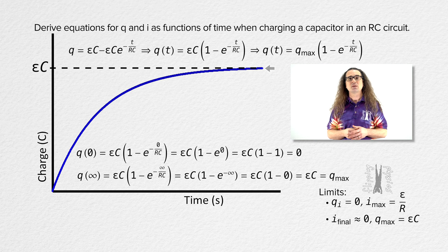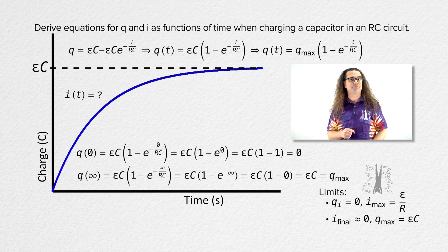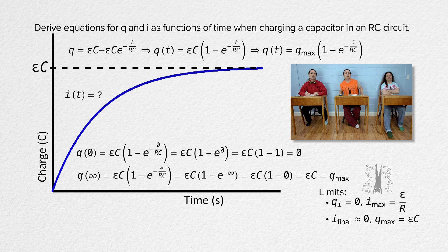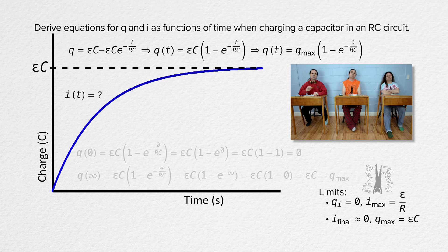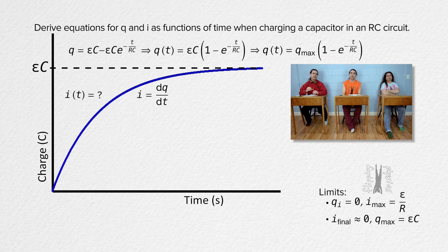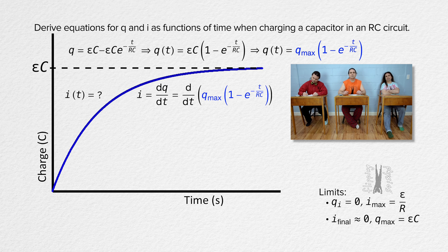Now let's solve for the current in the circuit as a function of time. Current equals the derivative of charge with respect to time, and we now have an equation for the charge on the capacitor as a function of time, so we can substitute that equation in.